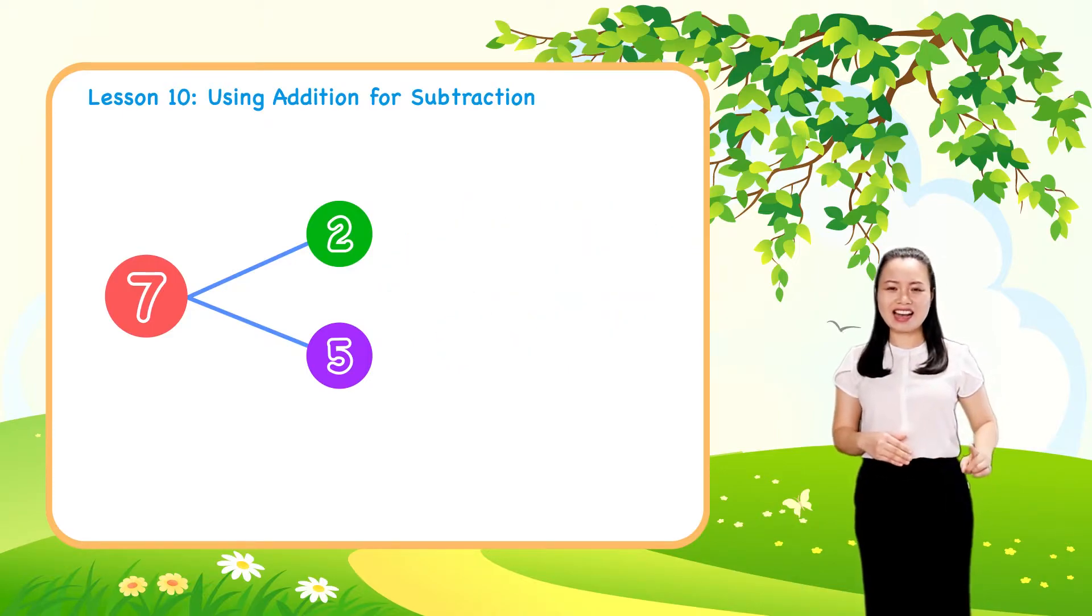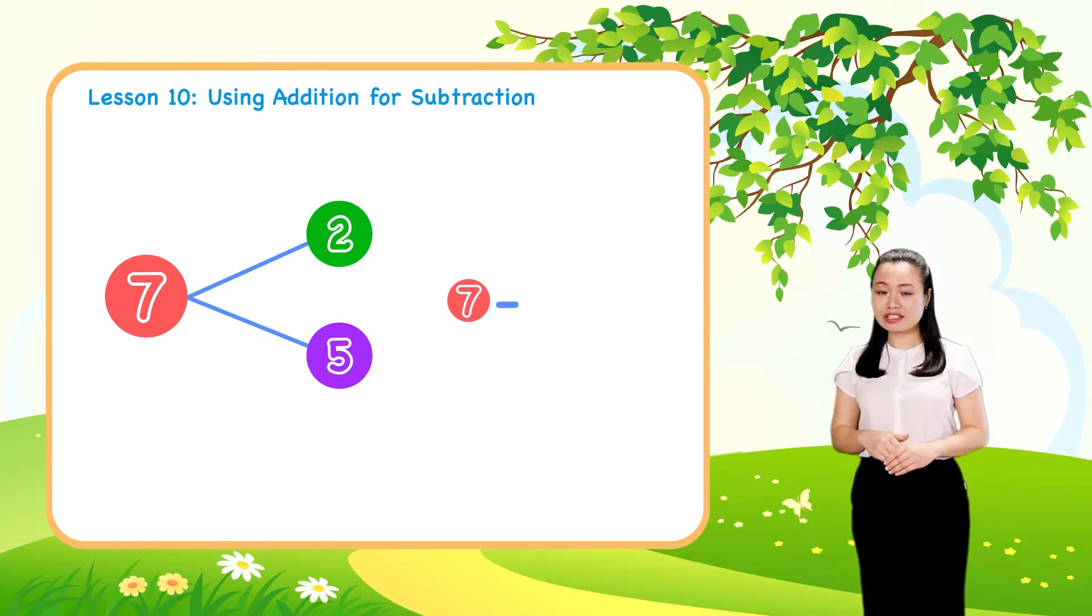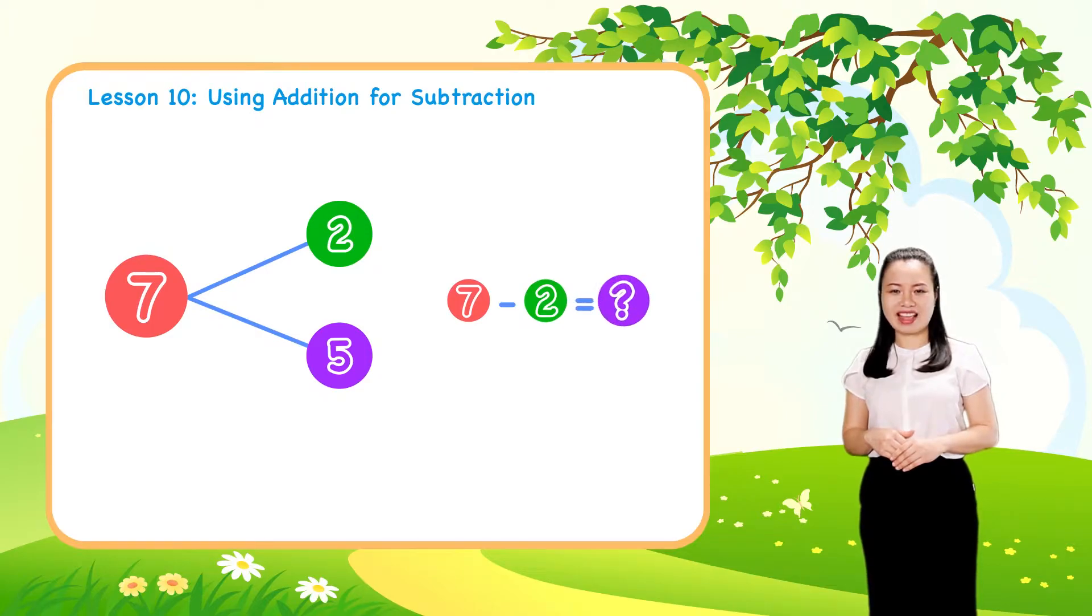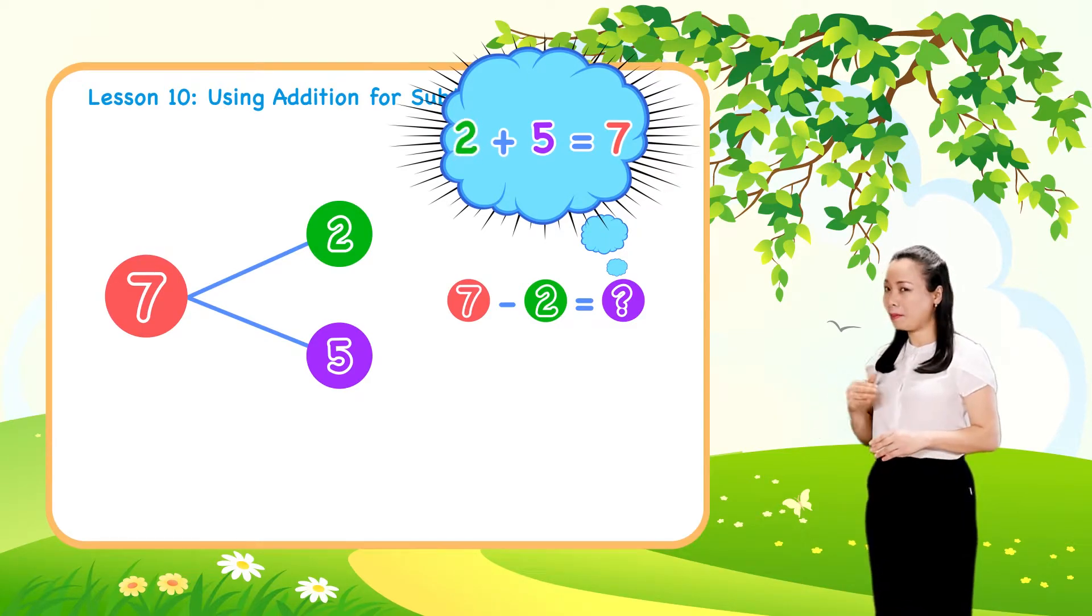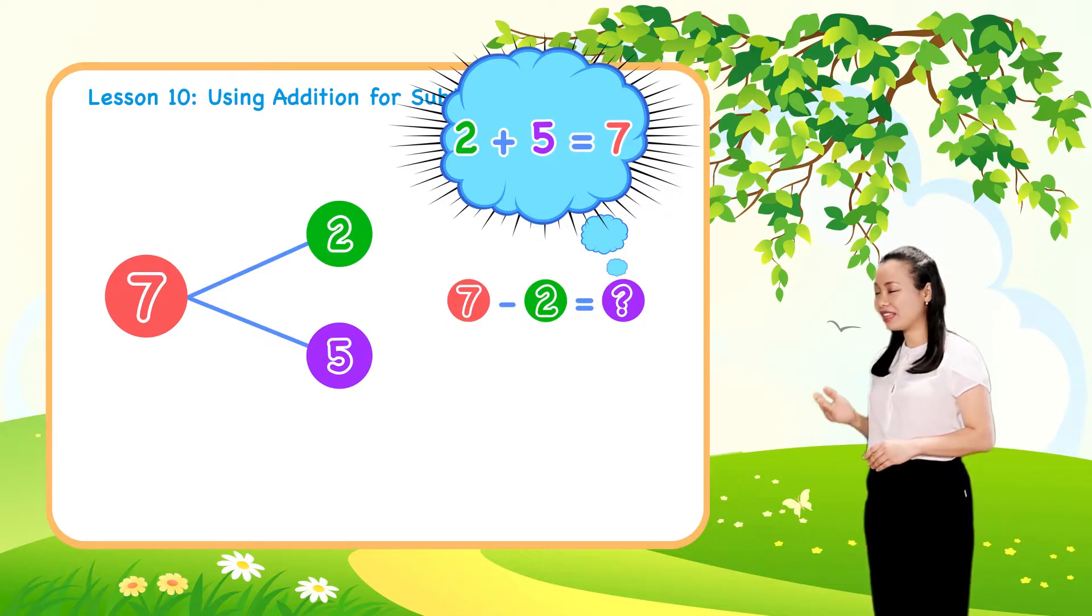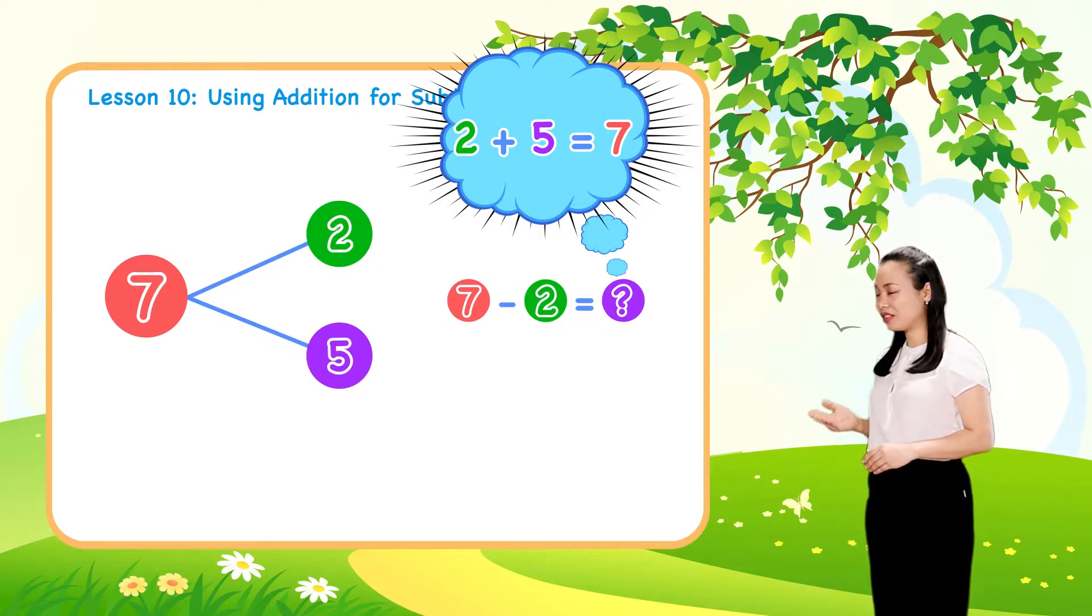So if you are asked to find 7 minus 2, then you can think because 2 plus 5 equals 7, therefore 7 minus 2 equals 5.